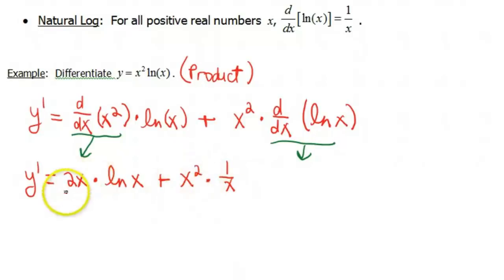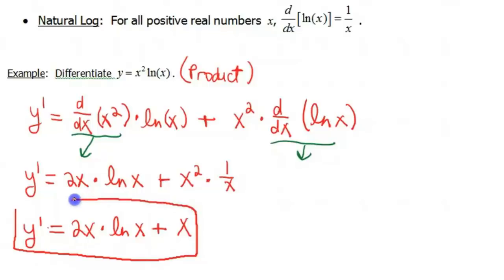You can certainly leave your answer like this, or we can make it look a little bit nicer. So y prime is gonna be equal to 2x times the natural log of x plus, now how can we pretty up this last term? Well, x squared times 1 over x is simply just x. If you want to do some factoring, I guess you could, but that's all algebra. Our calculus is done, and for me, this answer looks pretty darn nice.